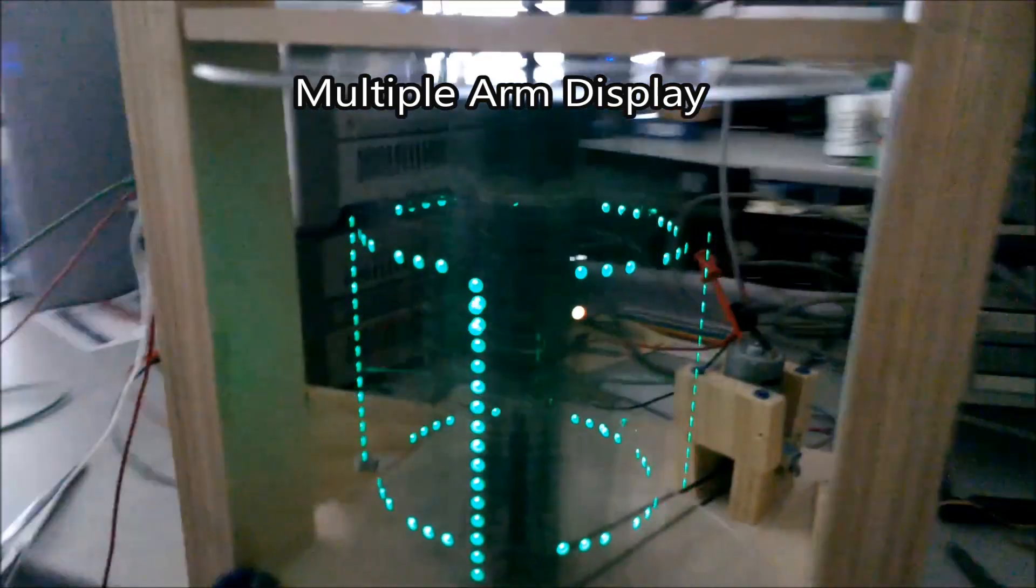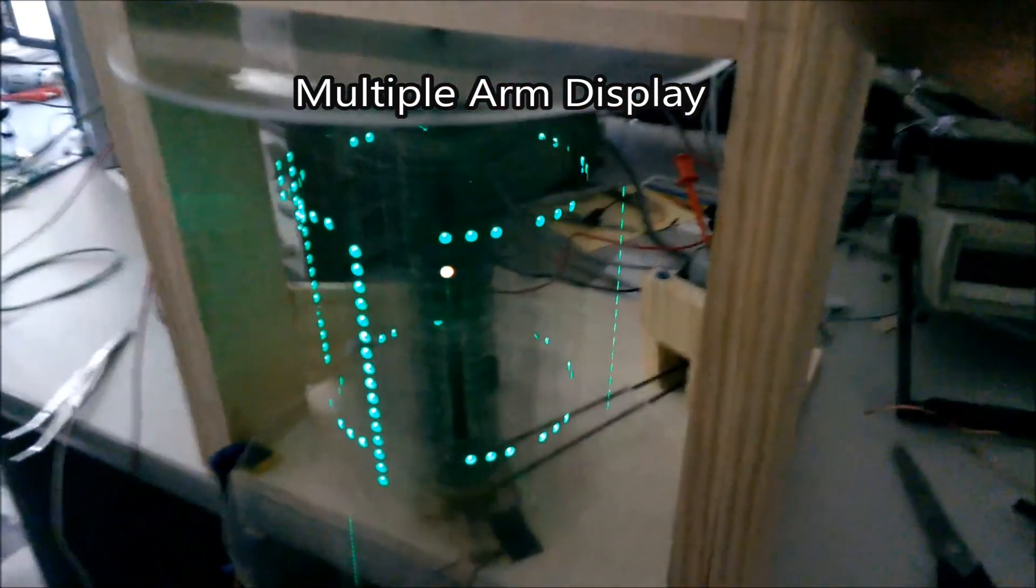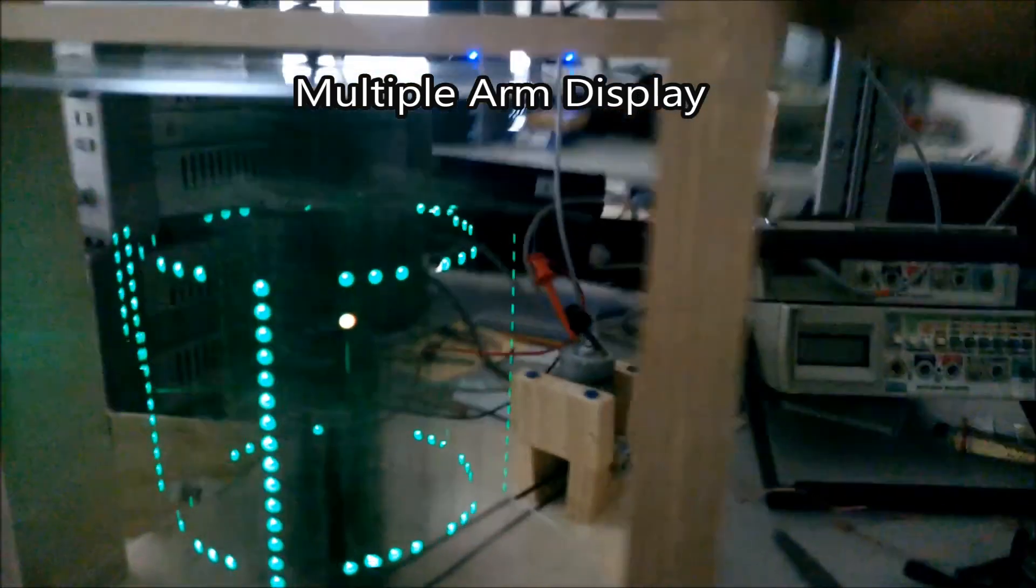However, with the use of multiple arms, you are able to display more complex images, such as a cube-shaped object like the one you see here.